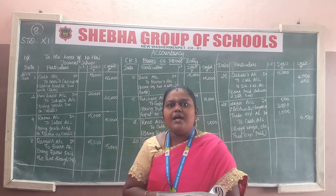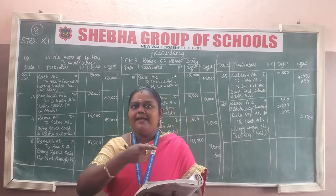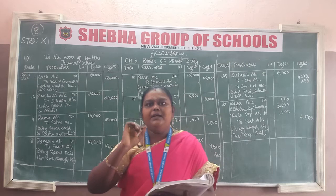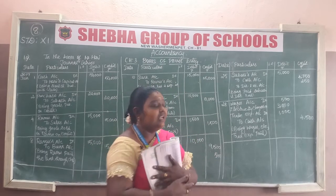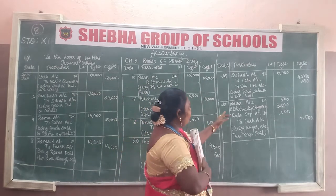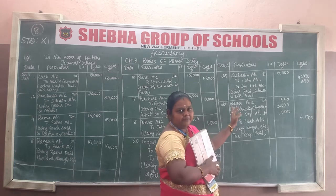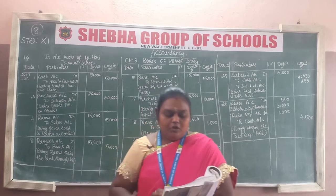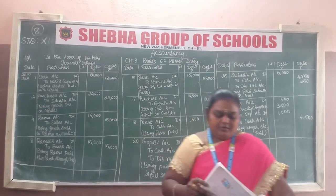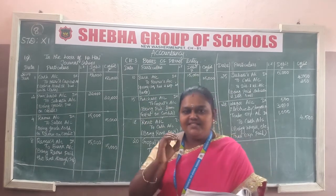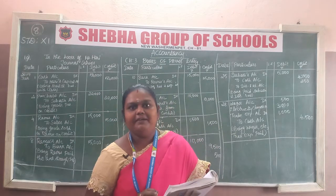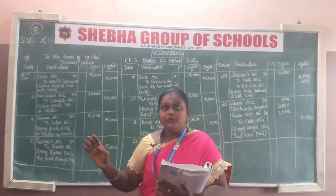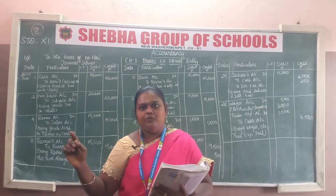Shang's bill was paid. Students, you can now check the journal entry and correct any errors. Draw the line after each entry as required.